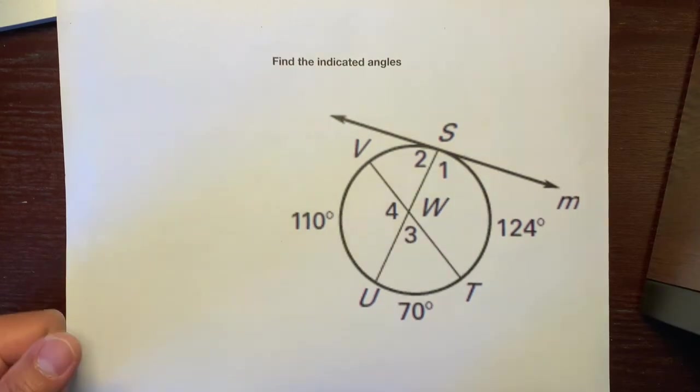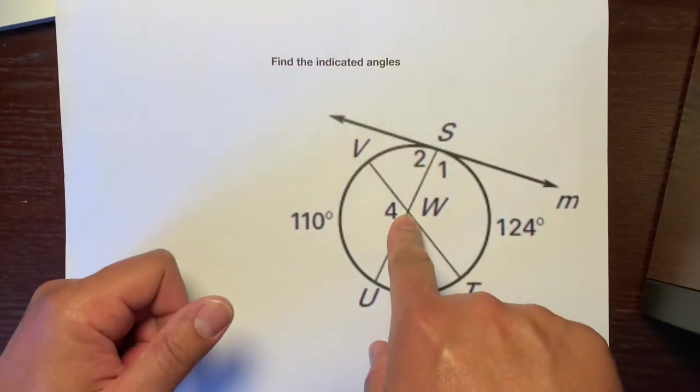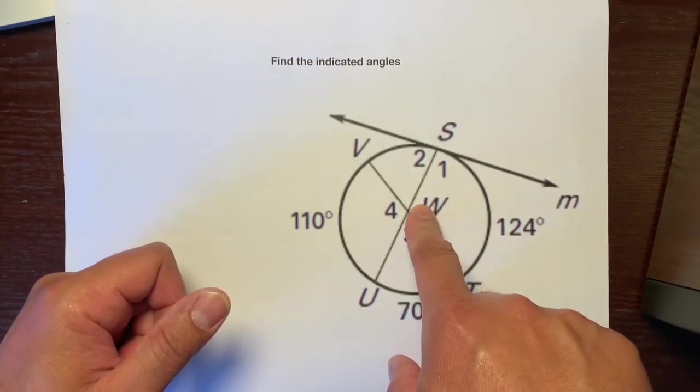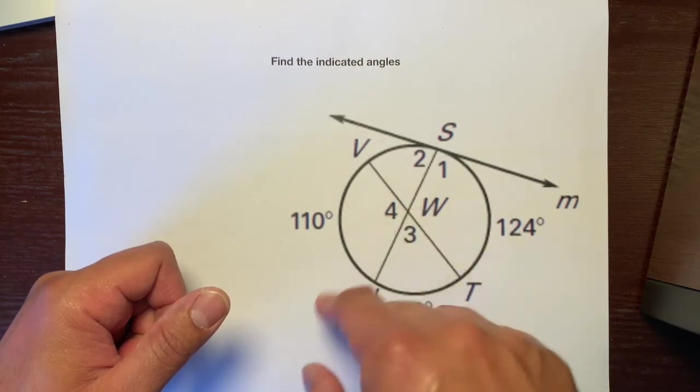Let's figure out what angle one is. First thing is, it doesn't say that this is the center, so that doesn't mean that this angle right here is 124. So no central angles.